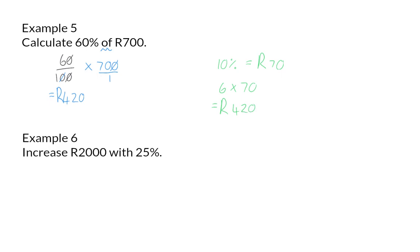Example 6. Increase 2,000 rand with 25 percent. So here we want to know how much is 25 percent of 2,000 rand. I already know that 25 percent simplified is a quarter, so I want to know what a quarter of 2,000 rand is. That means I am going to divide 2,000 by 4, and that is 500 rand. The amount needs to increase by 500 rand, so if I take my original 2,000 rand and add 500, I have a final amount of 2,500 rand.